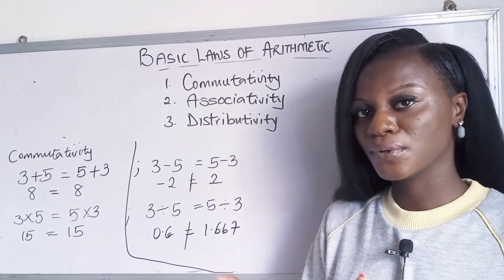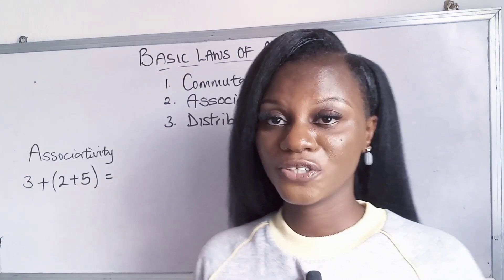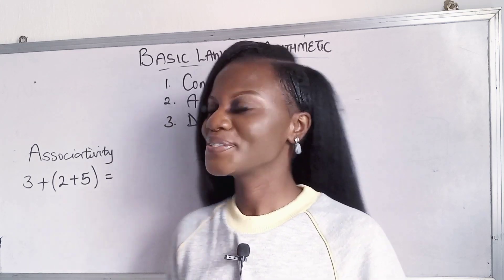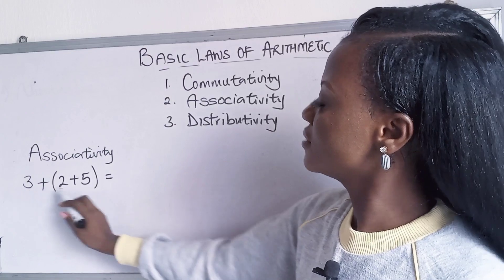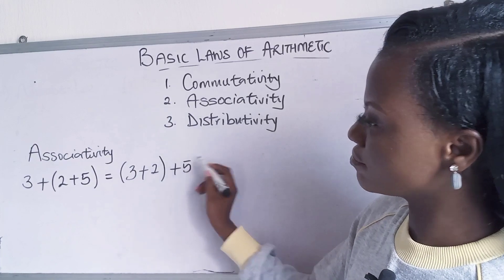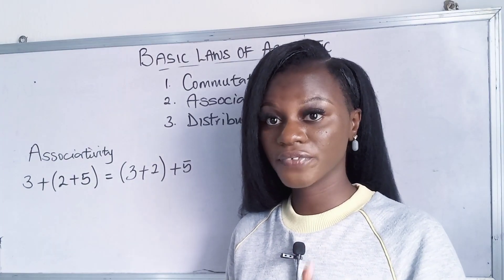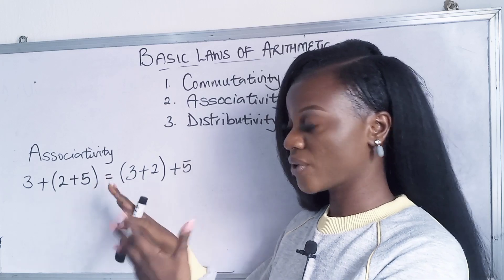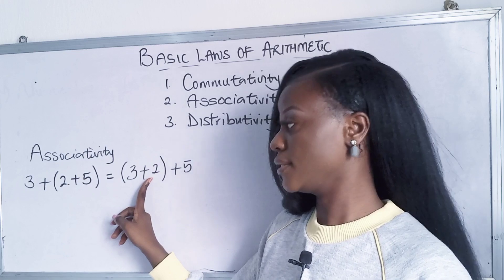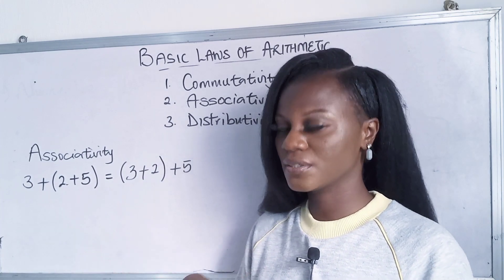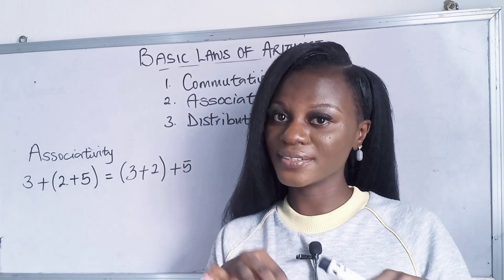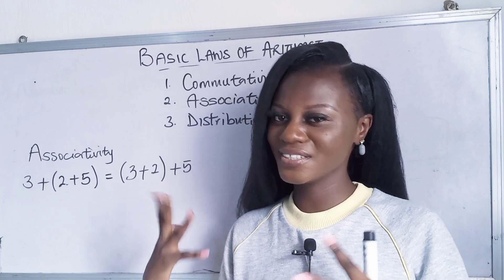Now let's move to the associative rule. Associativity comes from the word 'associate' — it means you are able to mingle. So for an expression like 3 plus 2 plus 5, associativity means you can bring 3 into a bracket with 2 and leave 5 outside, or pair 2 with 5 and leave 3 alone. The figures don't change — you only change the bracket positioning. That's how associativity works; the bracket just changes which numbers are grouped together.